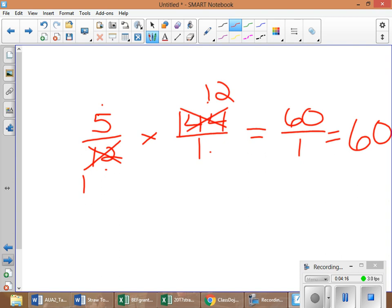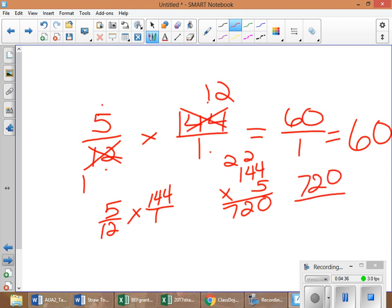And just to check it to make sure, let's do the problem over here. 5/12 times 144 over 1. So, 144 times 5 equals 720. And then 12 times 1 is 12. Now we have to do 720 divided by 12. 12 goes into 72 six times. 6 times 12 equals 72. You have 0. That goes in 0 times. There's our answer, right? 60.